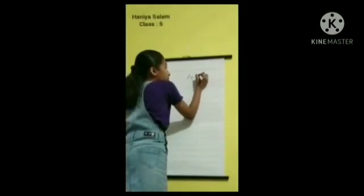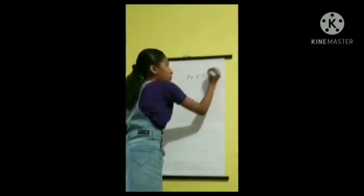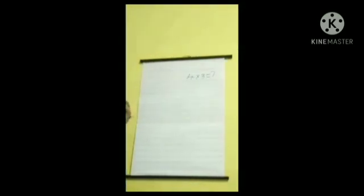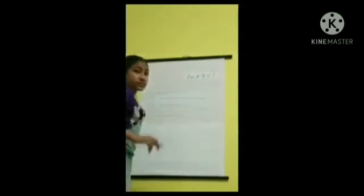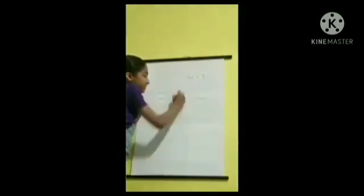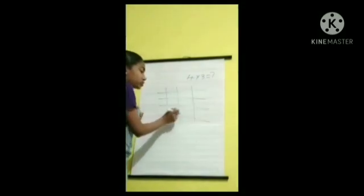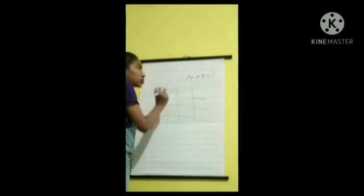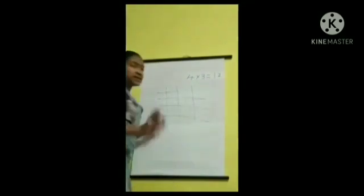What is the answer? First, we can draw four horizontal lines. 1, 2, 3, 4, 5, 6, 7, 8, 9, 10, 11, 12. Then, 12 is the answer.